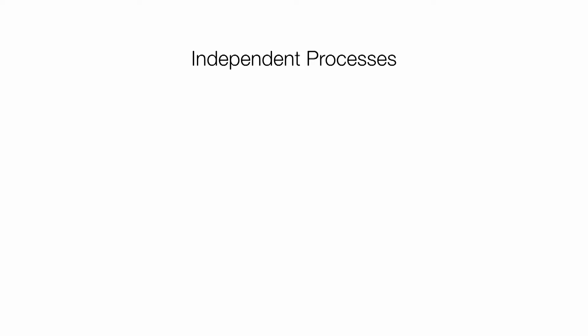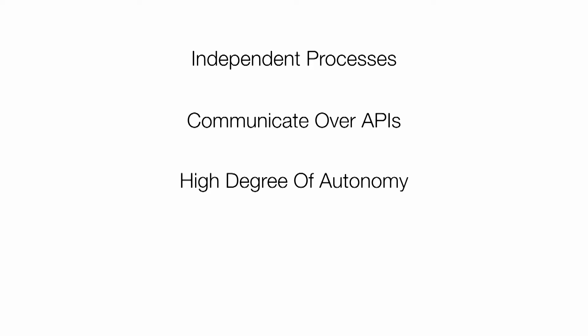They have some key characteristics. Typically, we're talking about independent processes — processes where you're scaling by process, not necessarily just putting all of these things into a single container. They communicate predominantly over APIs or perhaps via events or messages, rather than using database integration, which can cause many problems. They also have a very high degree of autonomy. You know you're doing microservices well when you can take one service, make a change, and deploy it independently into production without having to touch anything else.